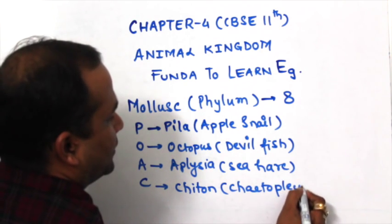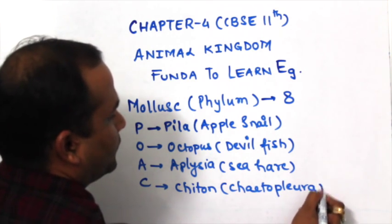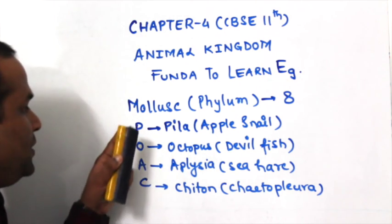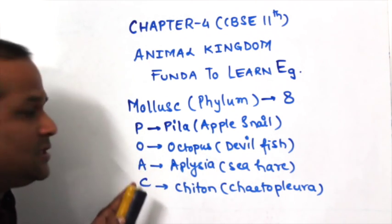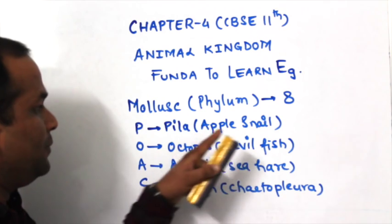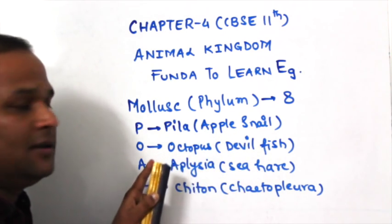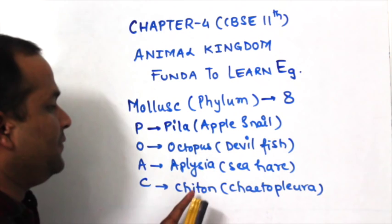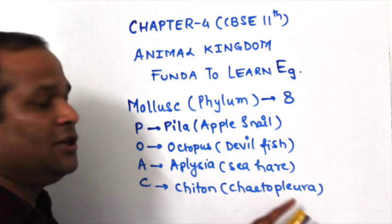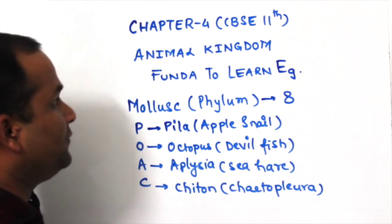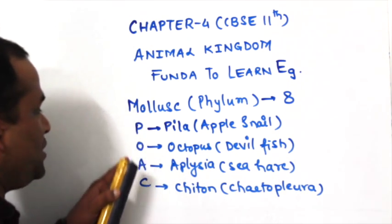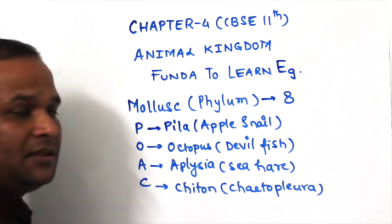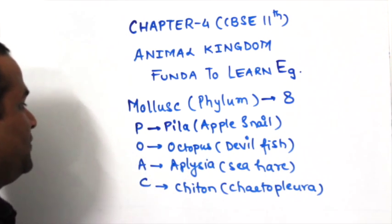Keto Pura. So out of 8, the first 4 examples are POAC: P for Pila/Apple Snail, O for Octopus/Devil Fish, A for Aplysia, C for Chiton and Keto Pura. These are the 4 examples; the funda is POAC.